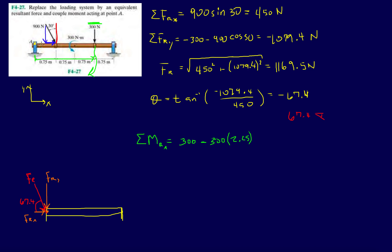We know that the X component of this 900 Newton force, if you extend the line of action, intersects point A. So that doesn't contribute any torque or moment.